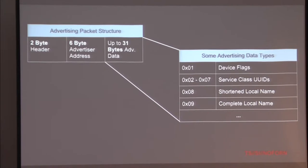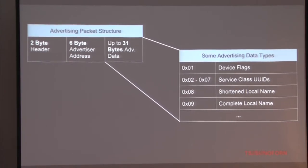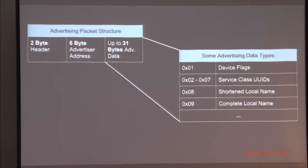The 6-byte advertiser address is very interesting because it is structurally and functionally similar to a MAC address - familiar to anyone from the Ethernet and Wi-Fi worlds. With advertising data you also have tag-length values included in the advertising packet. These values contain flags telling you a little about the device's capabilities, information about the services presented by the device, and of course names - that's how when you look at your phone you can see 'this is a Tile' or 'an Apple Watch.' These service identifiers, complete names, and shorthand names are very useful when you want to identify what kind of device you have.